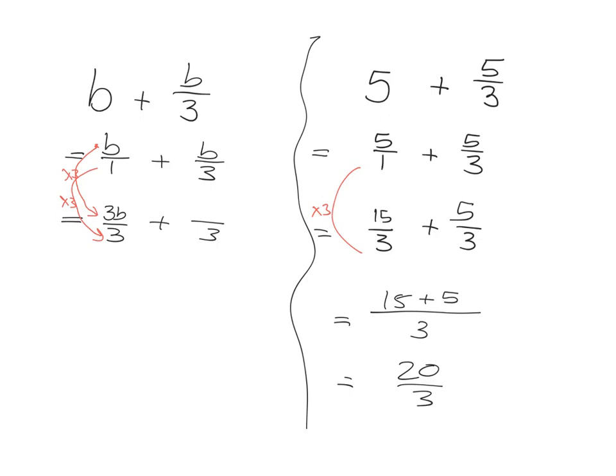And then your other bit over here hasn't changed at all. It had a denominator of 3, it's going to stay a denominator of 3 so it's just going to be b.